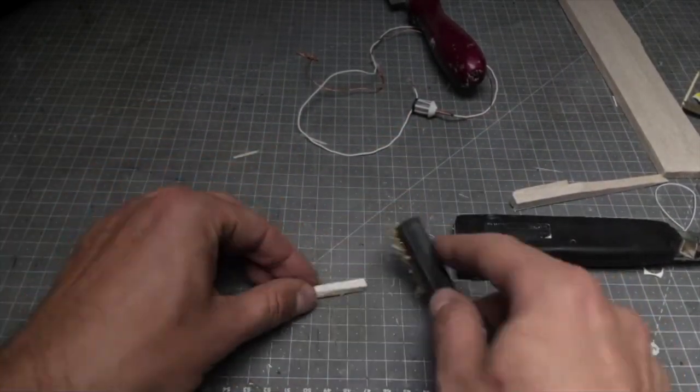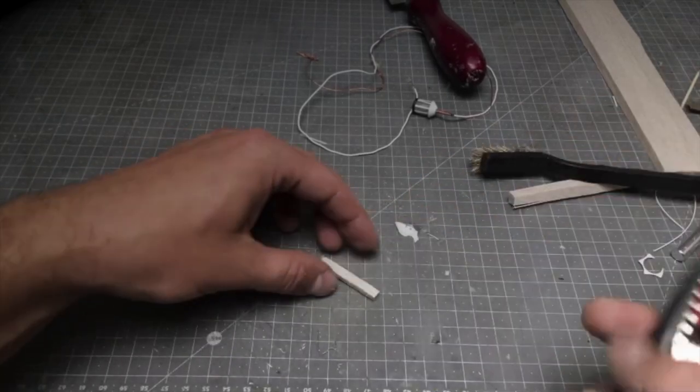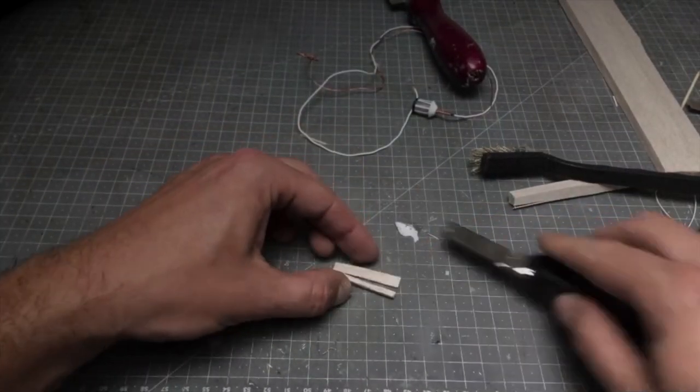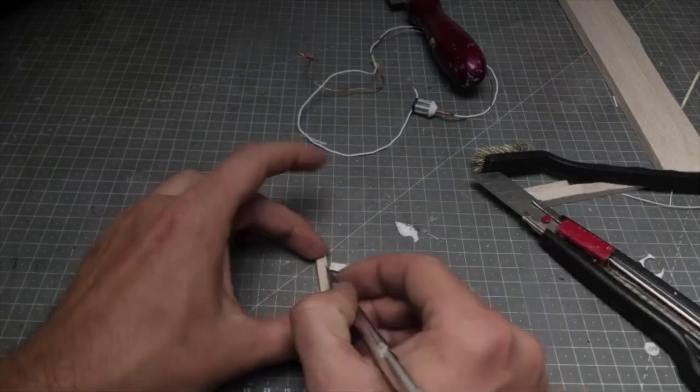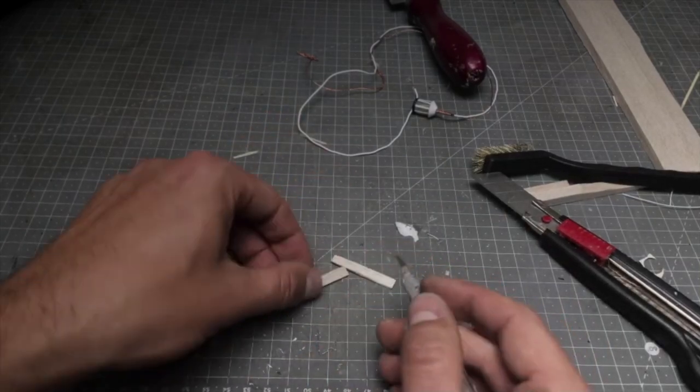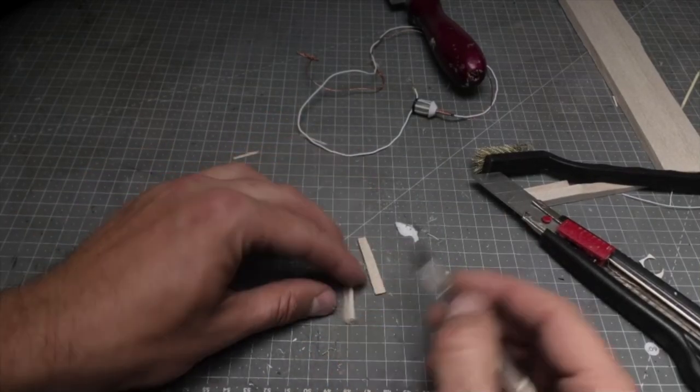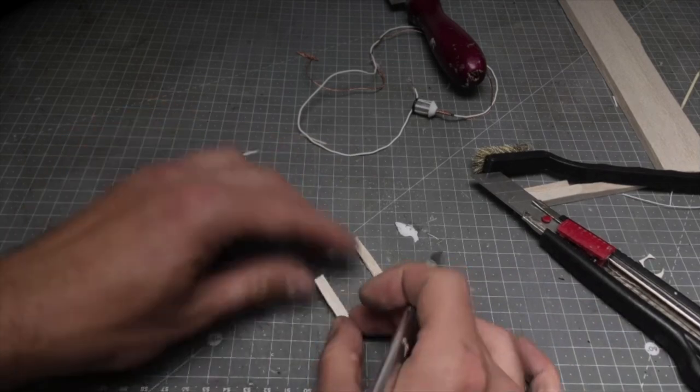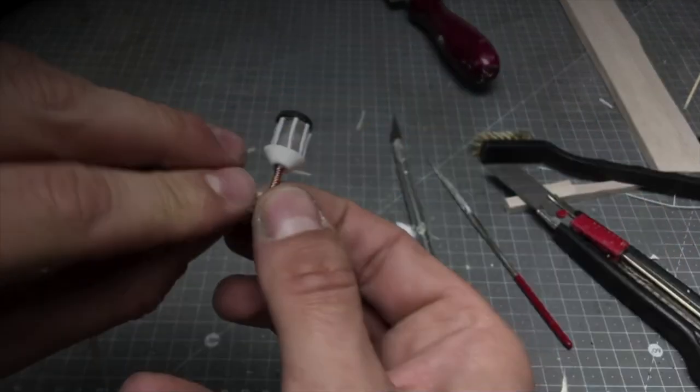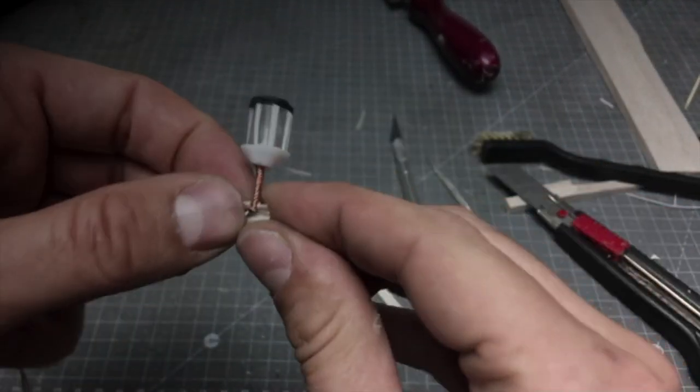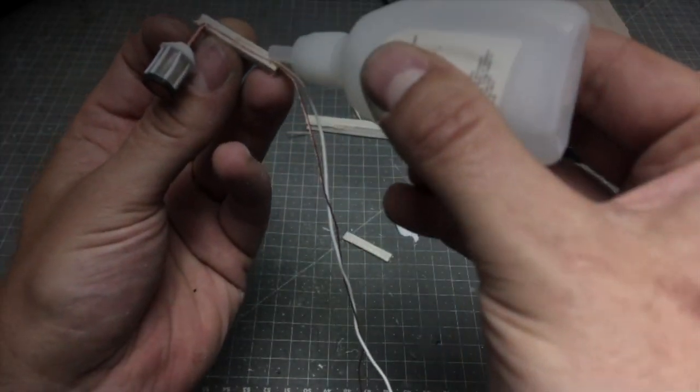The whole idea is to hide the cables inside the wooden posts. So we need to cut it in half and then make a space for the wire to go. I'm using X-Acto knife and then a file to make the space big enough for the cable to go inside. Now we just need to glue those pieces together.